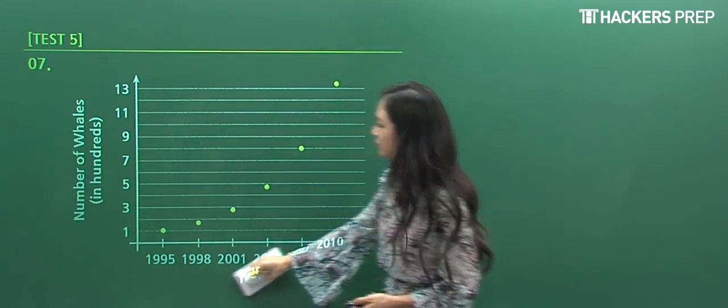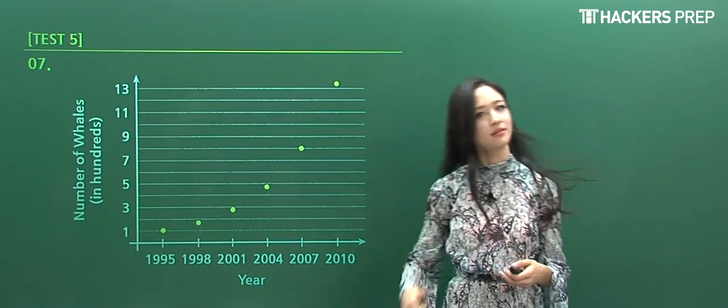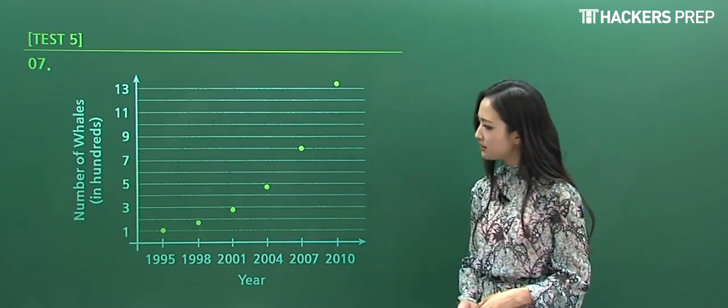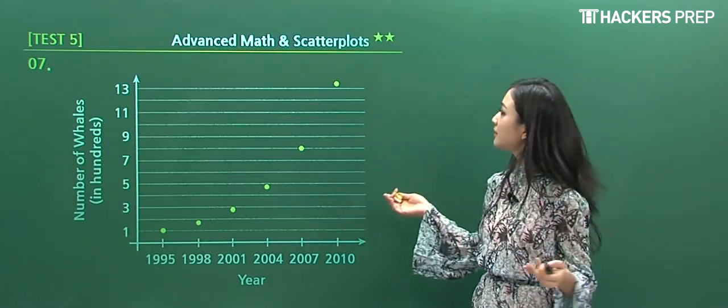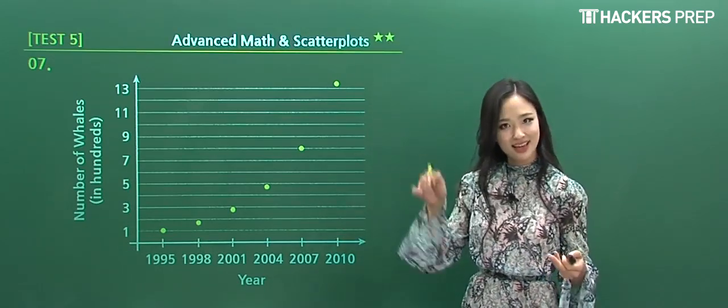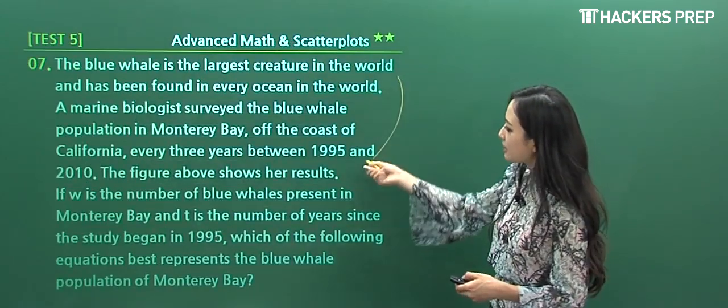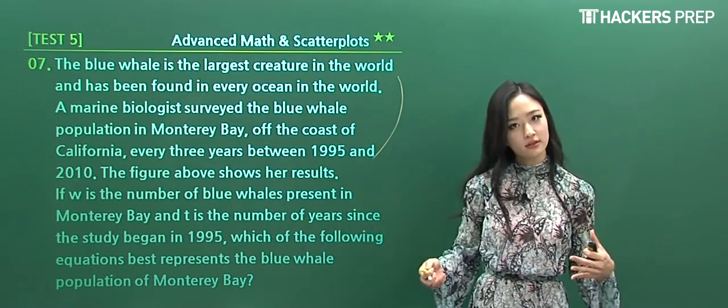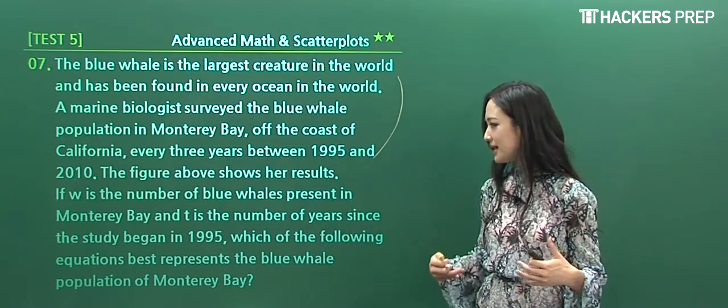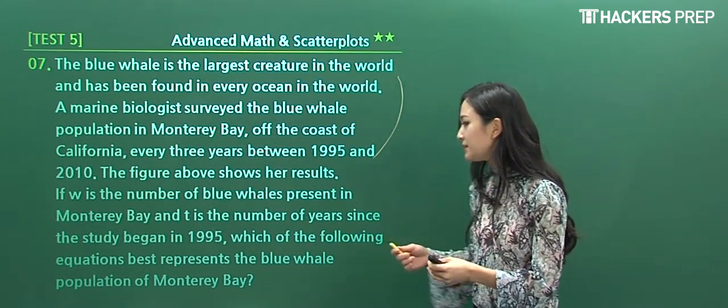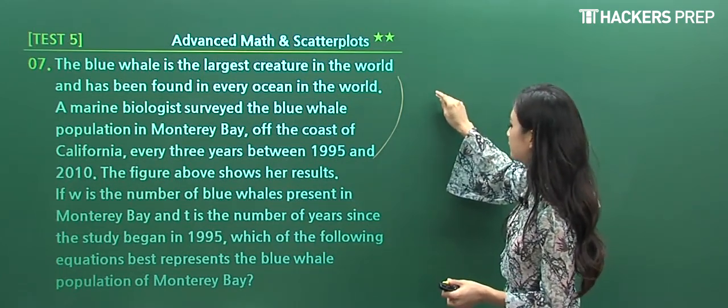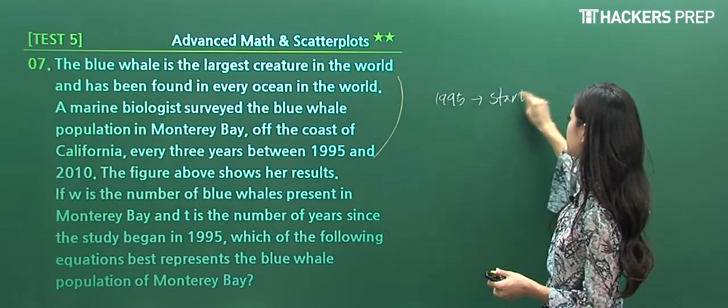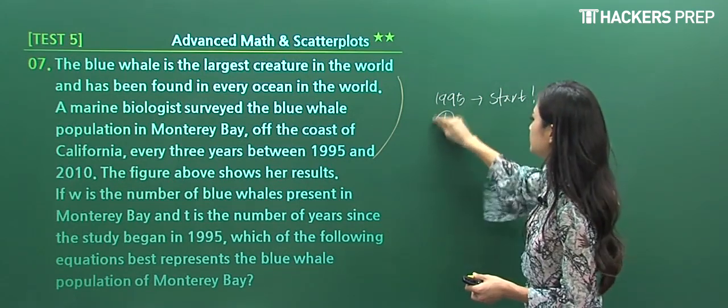Number seven: we have a basic graph again. Look at the chart and the axes. The x-axis is time and the y-axis is the number of whales in hundreds. This is a scatterplot type of question. If w represents the number of whales present in Monterey Bay and t is the number of years since the study began in 1995, the starting reference point is 1995. So t is represented in years after 1995.